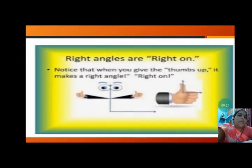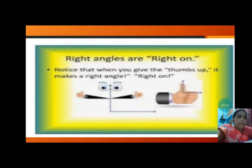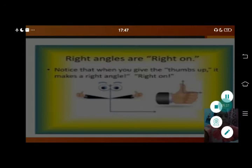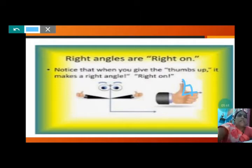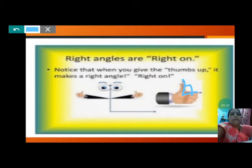Right angles are right on! Notice that when you give the thumbs up, it makes a right angle. When you are giving a thumbs up, that makes 90 degrees or a right angle — that is called right on.